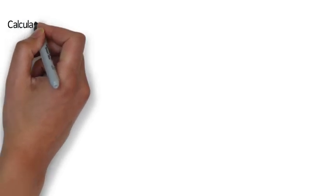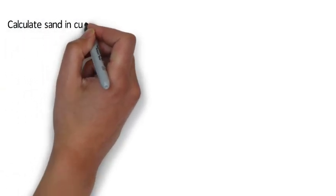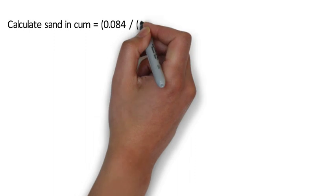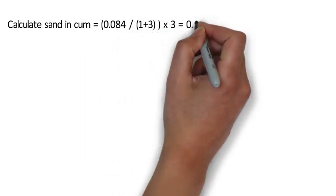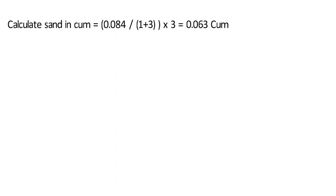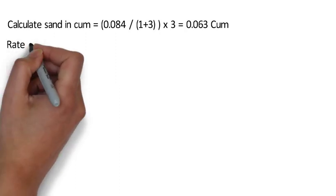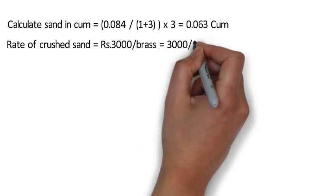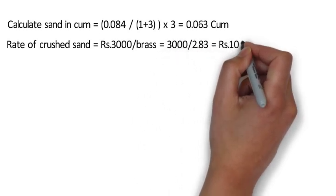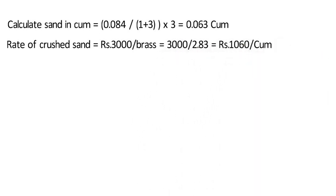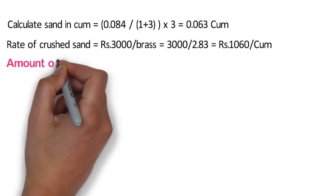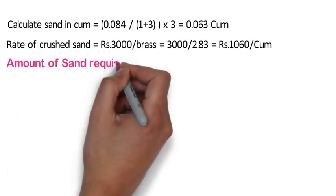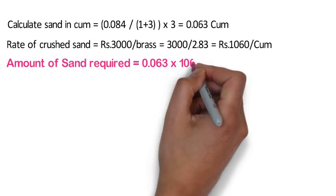Now we will calculate sand in cubic meters. The formula is 0.08 divided by (1 + 3) multiplied by 3 = 0.06 cubic meters. Sand is 3 times the cement in the proportion. Considering the rate of crushed sand at 3,000 rupees per brass, that is 3,000 divided by 2.83 = 1,060 rupees per cubic meter. Amount of sand required shall be 0.063 x 1,060 = 67 rupees.